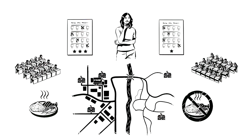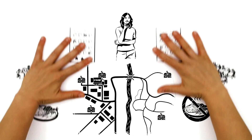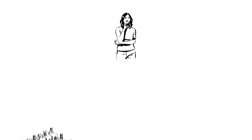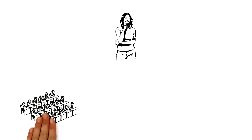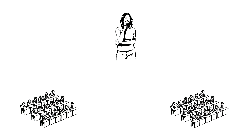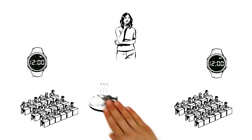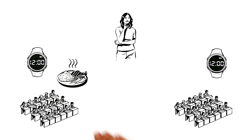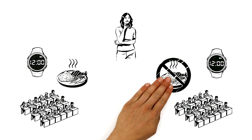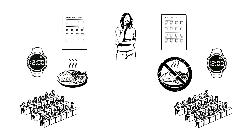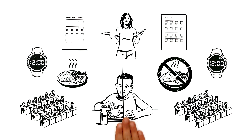Clare reflects that one should ideally compare exactly the same children at exactly the same time, once with and once without free lunch. But unfortunately this is not possible — no one can simultaneously eat and not eat.